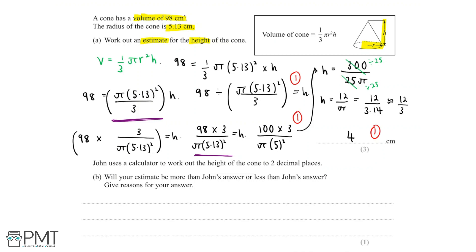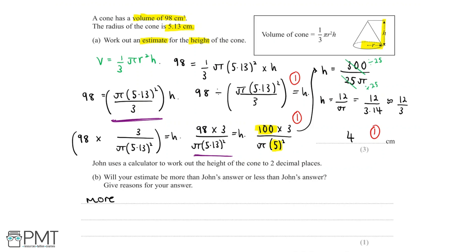Now let's look at how we rounded. The numerator we rounded to one significant figure, which rounds up to 100. And 5.13 to one significant figure becomes 5, which rounds down. So now we can say that our estimate for the height of the cone will be more than John's answer. And this is because the number in the numerator goes up and the number in the denominator rounds down. And so we end up with an estimation that's larger than the actual value of height which John calculated.